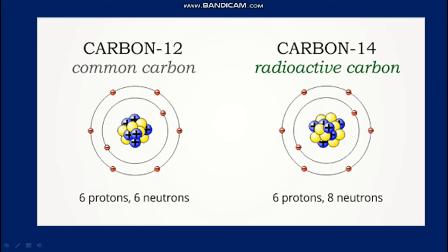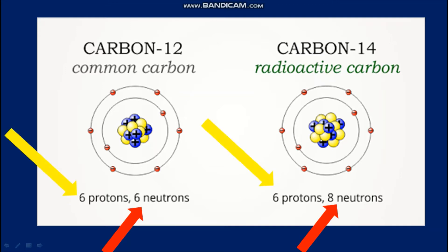A popular pair of isotopes are carbon-12 and carbon-14, which is used for carbon dating. Here you can see carbon-12 on the left, which is common carbon, has 6 neutrons, but the radioactive carbon on the right has 8 neutrons. Remember, both isotopes have the same number of protons, which is 6 in this case, otherwise there would be a different element.